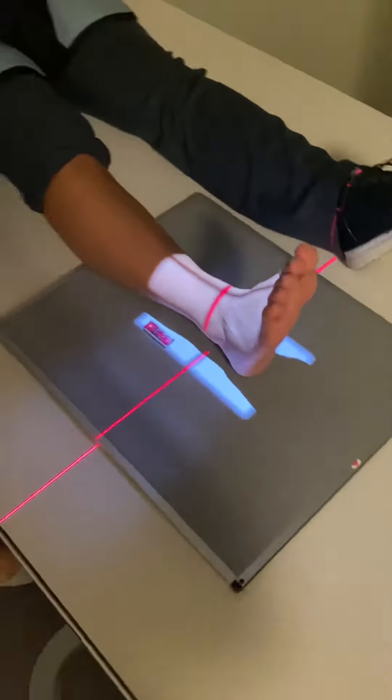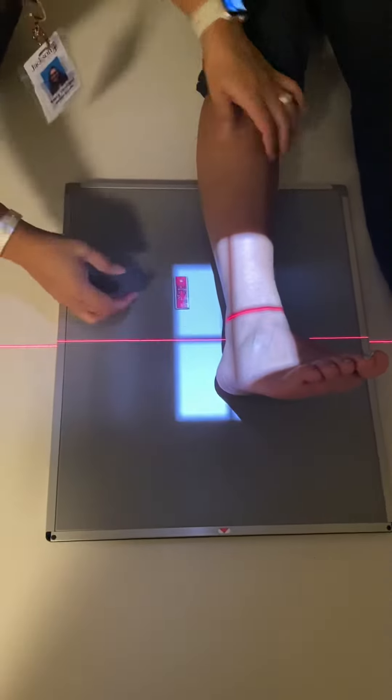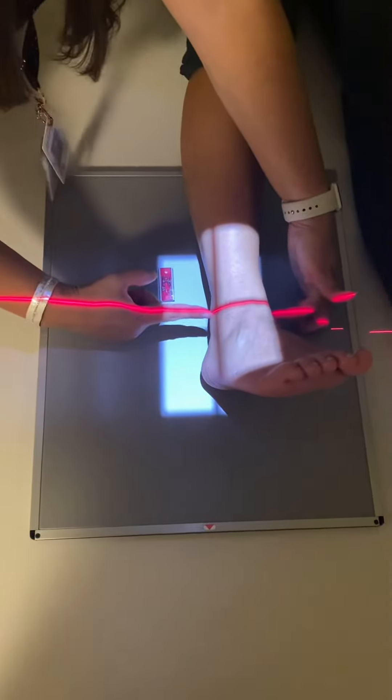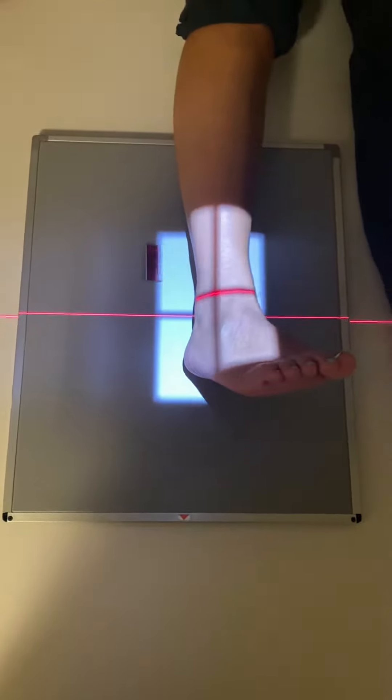Then for the Mortise, you're going to internally rotate 15 to 20 degrees. You want to make sure the whole leg goes, not just the foot. Now your malleoli should be equal distance to the IR, and you're still centering midway between the two.